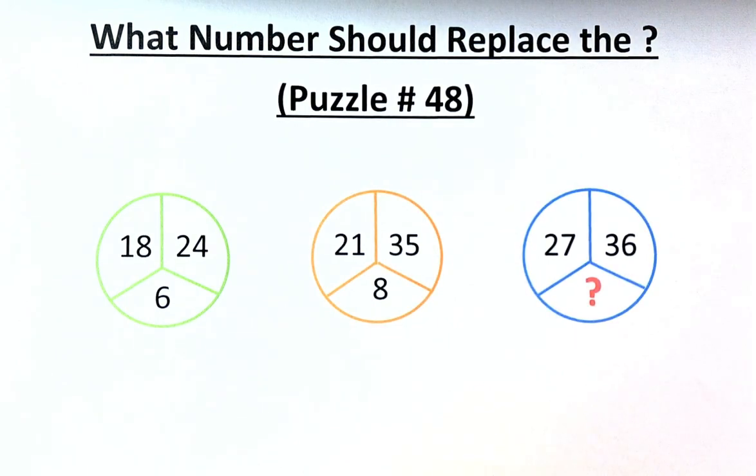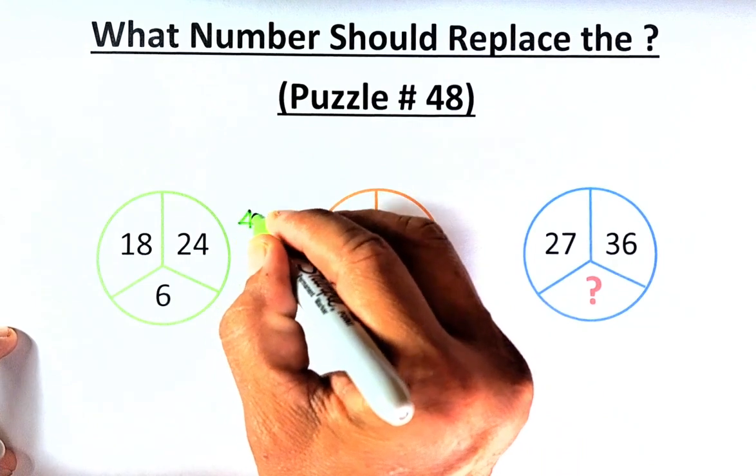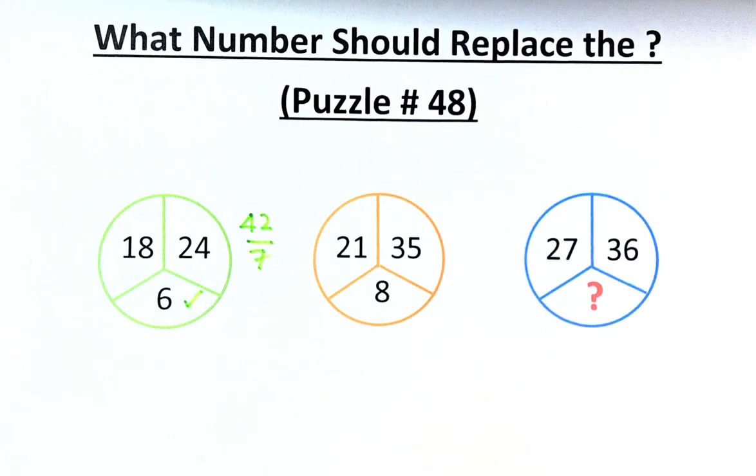So to solve the first circle, 18 and 24 equals 6, you need to add the numbers at the top. First, 18 plus 24, that will give us 42. And then you need to divide by 7 and that will give us 6. So you just add the two numbers and divide by 7.